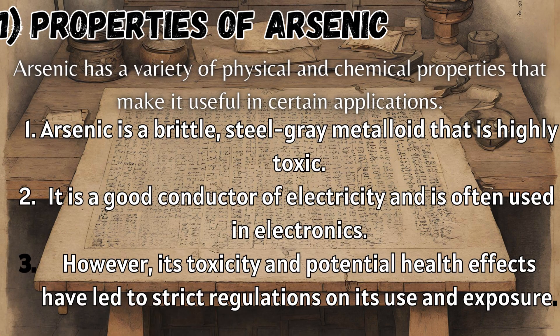Arsenic has a variety of physical and chemical properties that make it useful in certain applications. Arsenic is a brittle, steel-gray metalloid that is highly toxic. It is a good conductor of electricity and is often used in electronics. However, its toxicity and potential health effects have led to strict regulations on its use and exposure.